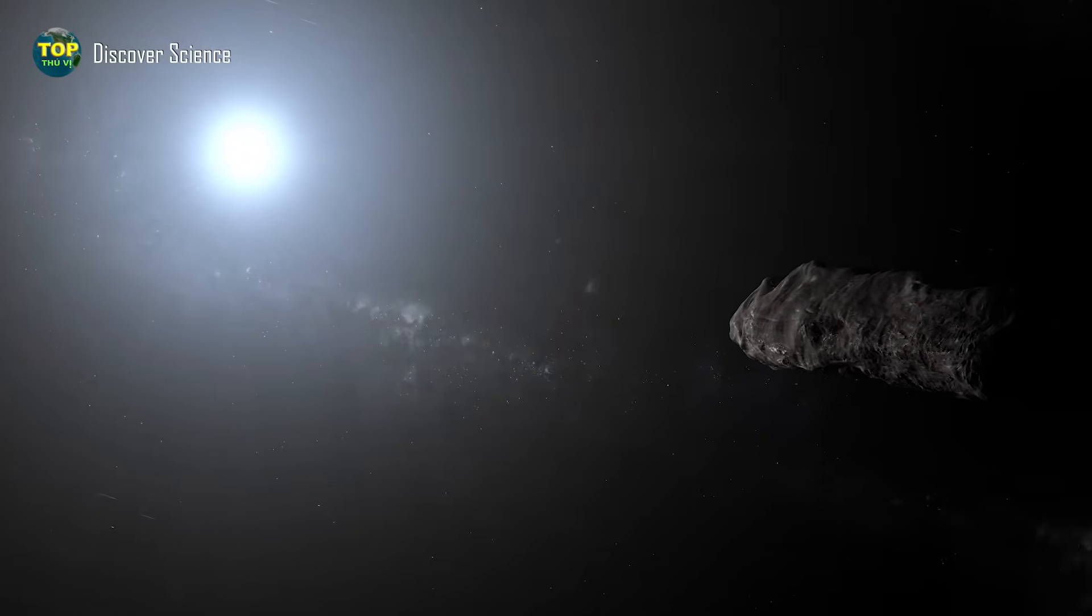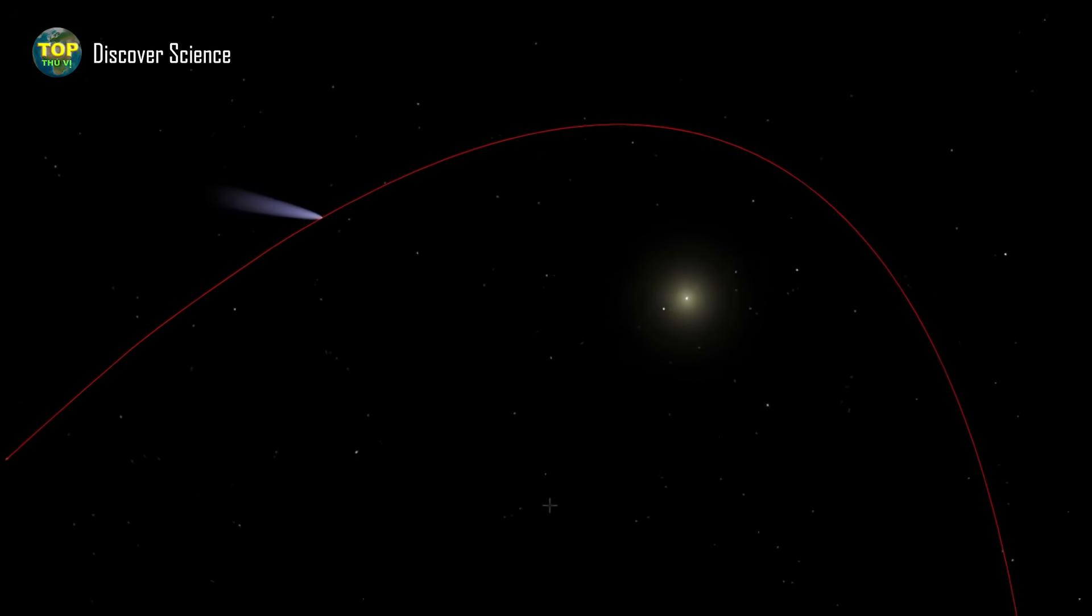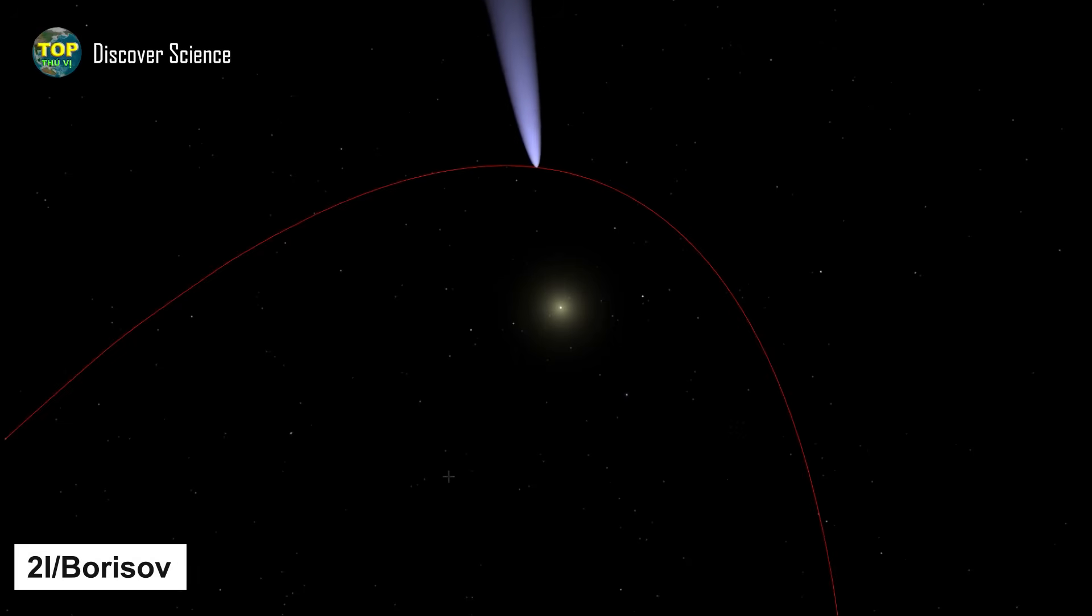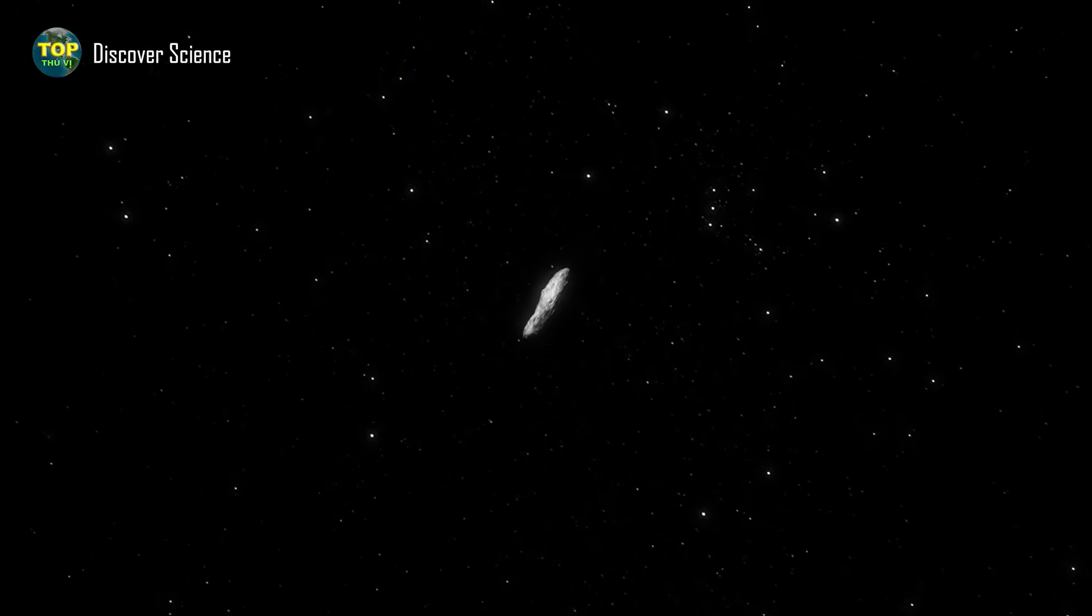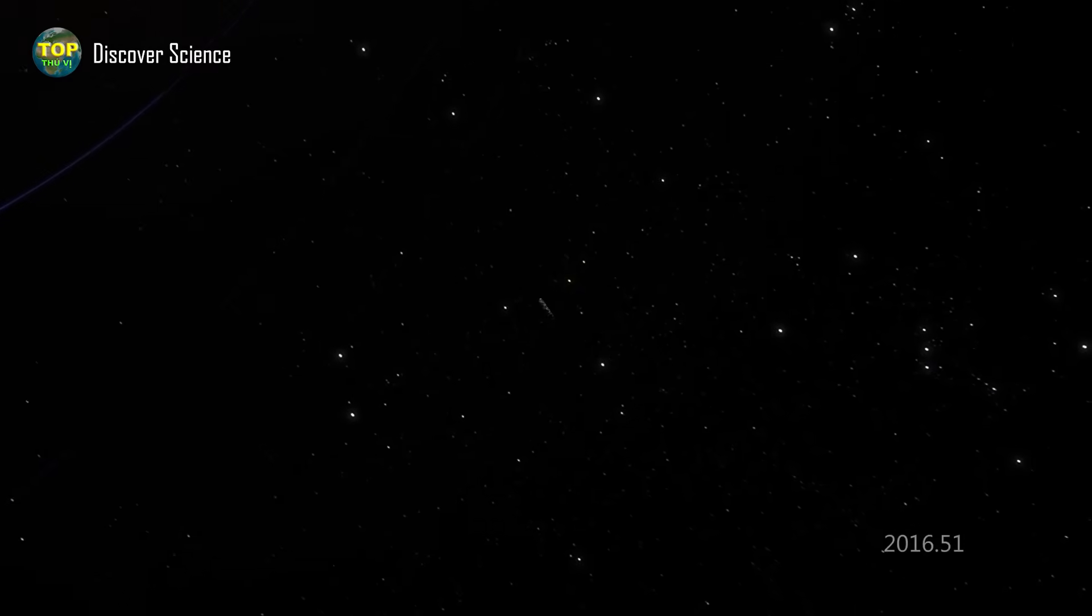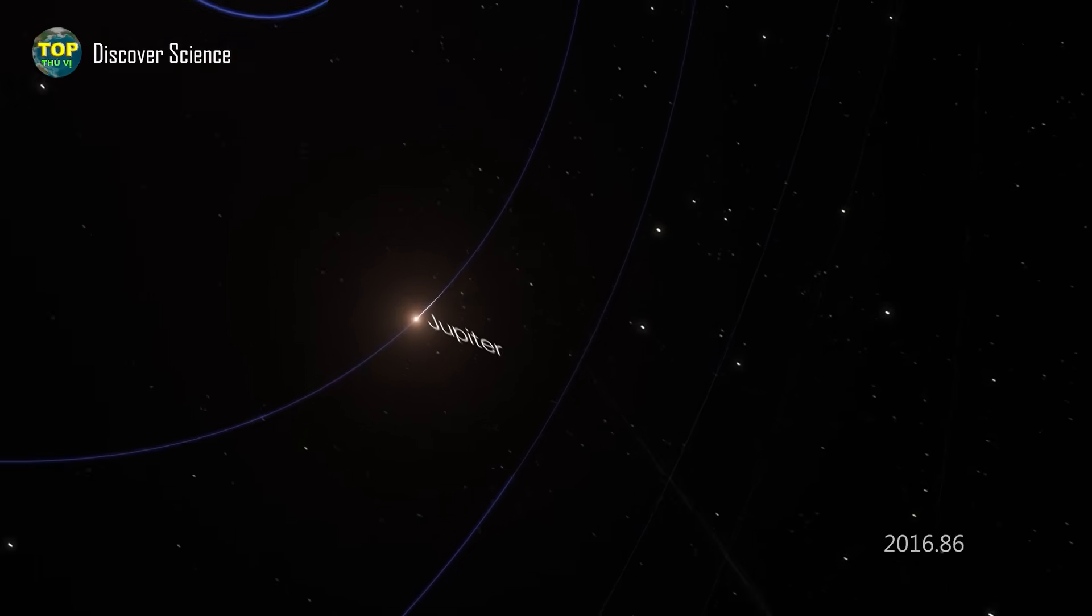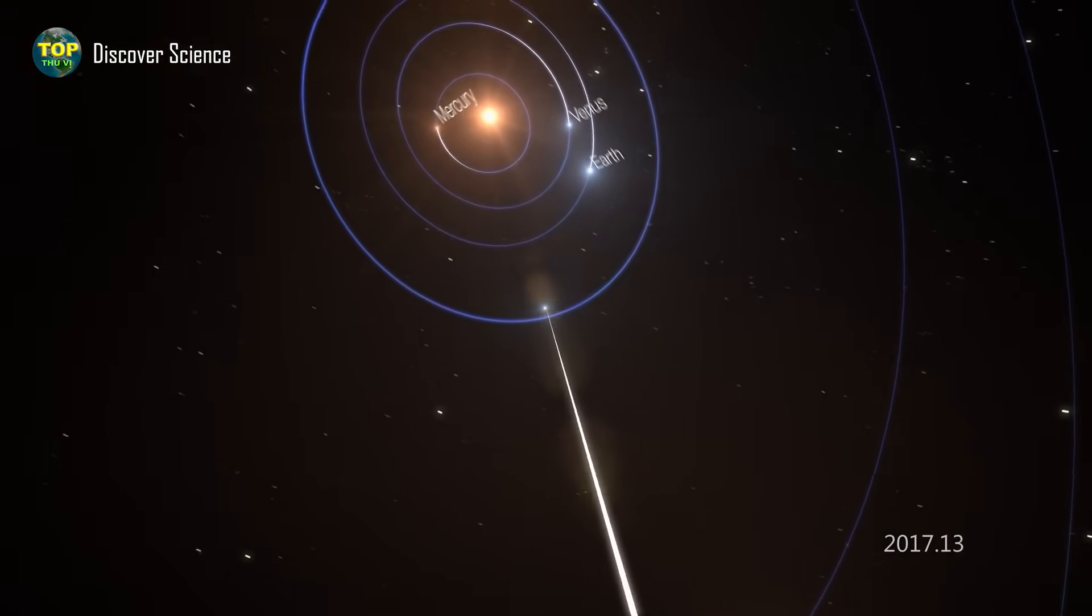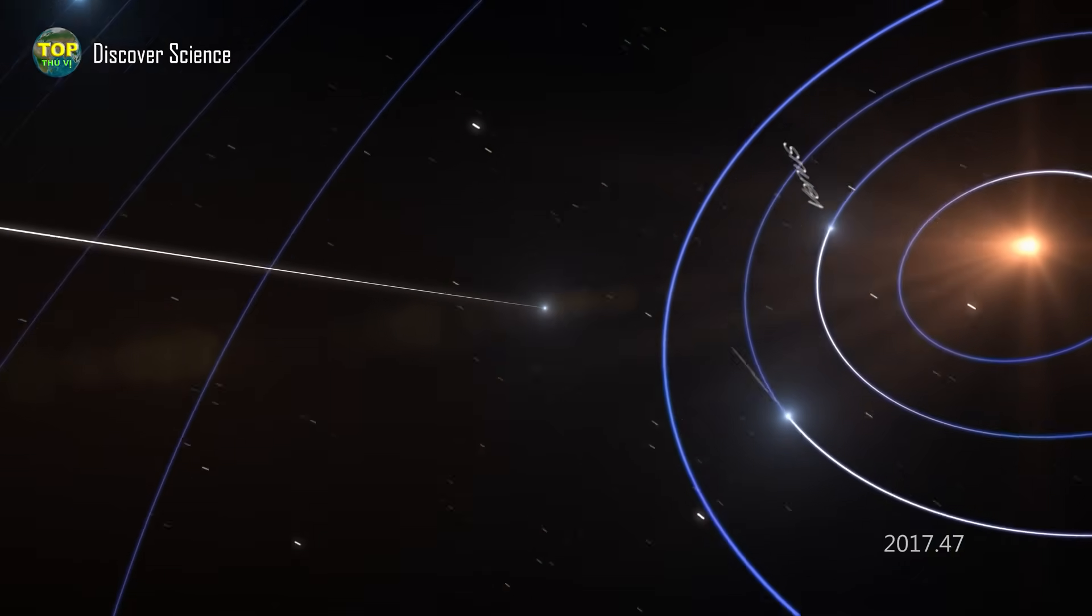'Oumuamua is the first interstellar object ever known to visit our solar system. Later, in 2019, a second interstellar object entered our solar system: Comet 2I/Borisov. Because 'Oumuamua was the first interstellar object to visit the solar system, astronomers were extremely excited and eager to study it. They wanted to understand the similarities and differences between it and the objects found within our solar system. Based on the limited data collected, scientists quickly noticed several key differences.